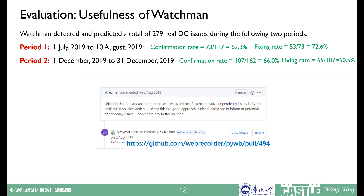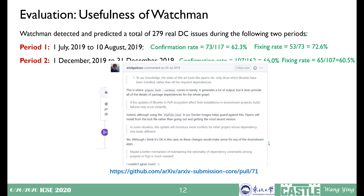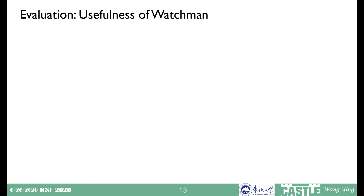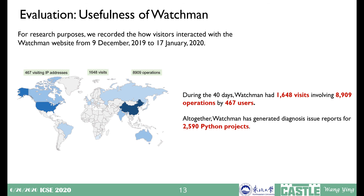Besides, we obtained several positive feedbacks from developers. For example, they thought that using a bot like Watchman to inform about potential dependency conflict issues on GitHub is the best solution for Python projects, and that such a mechanism of maintaining the rationality of dependency constraints among projects in PyPI is much needed. Recently, we also promoted Watchman in the open-source community by communicating with developers. We recorded how visitors interact with the Watchman website from December 2019 to January 2020, and altogether Watchman has generated diagnosis issue reports for 2,590 Python projects. These statistics demonstrate that real-world developers are genuinely interested in our proposed technique.